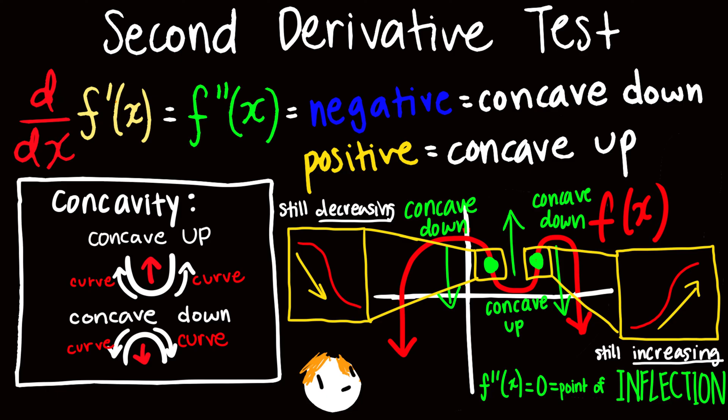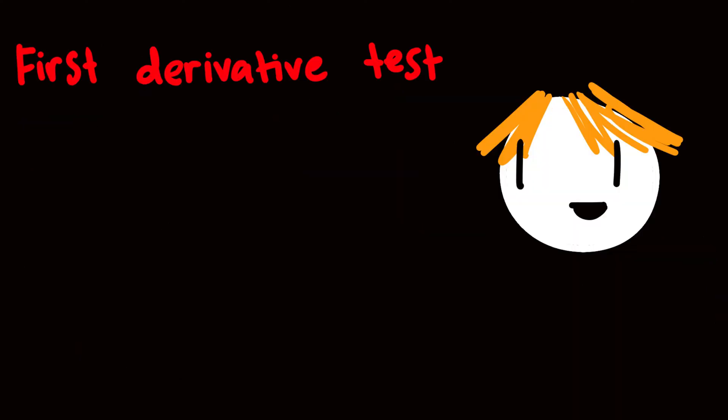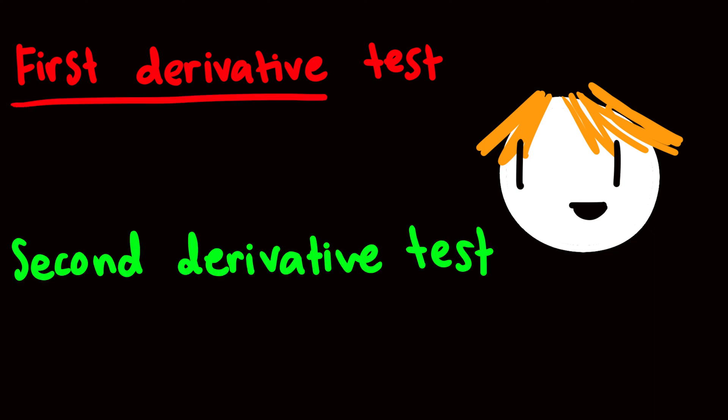So if you've noticed, this is very similar to the first derivative test, but it just relies on different things. To put it simply: the first derivative test relies on the output of the first derivative, and the second derivative test relies on the output of the second derivative.